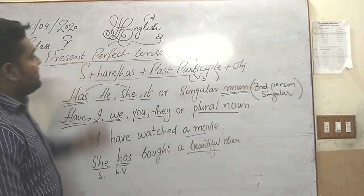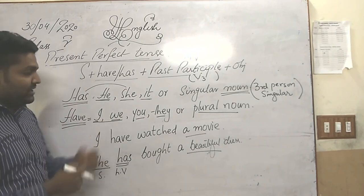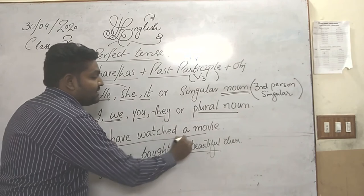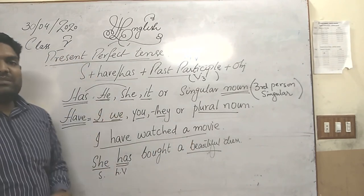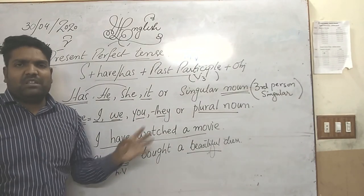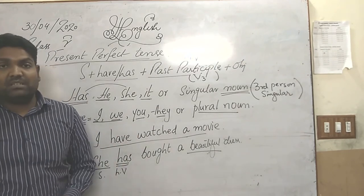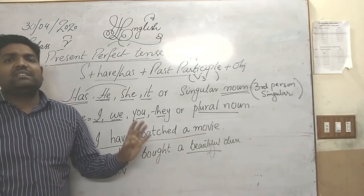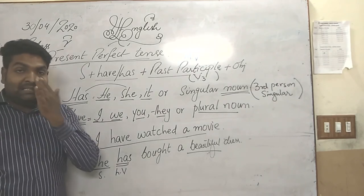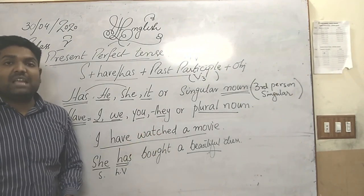We can use present perfect where the work has been done recently, or there is not much duration between that work and its completion. For example: 'I have watched the movie two hours ago, one hour ago' — meaning I have watched the movie and now I am not in a mood to watch another one. Similarly, 'she has bought a beautiful dress' means she does not want to buy another one. In both sentences, we can see that someone has done something recently.